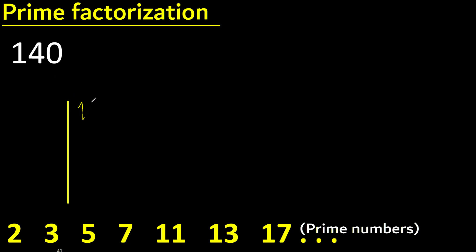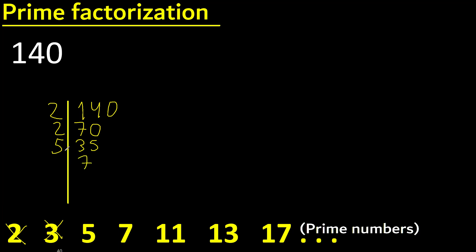Prime factorization. 140 can be divided by 2, because the last digit is even. Divided by 2 is 70. 70 divided by 2 is 35. 35 cannot be divided by 2, cannot be divided by 3, but can be divided by 5. Divided by 5 is 7. 7 can be divided by 7. Divided by 7 is 1.